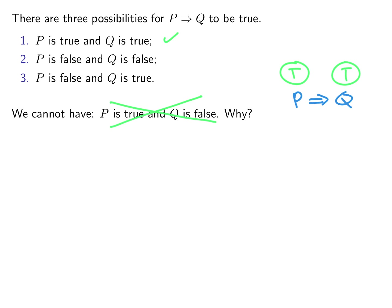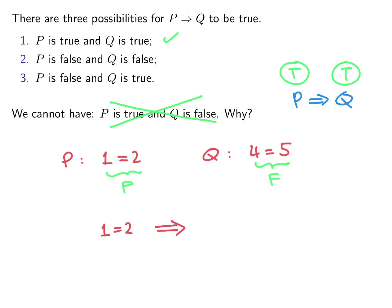Possibilities two and three look a bit funny. For example, P could be the statement '1 equals 2' and Q the statement '4 equals 5.' Both are false. But if we assume P — which is false — and add 3 to both sides, we get 1 plus 3 is 4, and 2 plus 3 is 5. So we can have a false statement implying a false statement.